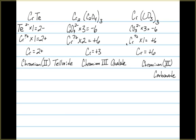In the last example, we see that we've got chromium and we've got the carbonate. The carbonate has a negative 2. There are three of them with a total of negative 6. Our total must be plus 6 for the chromium.